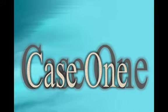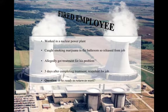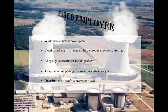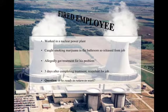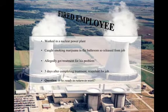My point in this presentation is to quickly run through these scales and then get to a case vignette to help understand how the MMPI might work. We have an individual who worked at a nuclear power plant, was caught smoking marijuana in the bathroom, was released from his job, allegedly got treatment for his problem, and three days after completing treatment reapplied for his job. The question is: is he ready for work? The employee assistance program refers this individual for an evaluation, and you decide to use an MMPI in addition to a structured interview to assess his readiness to return to work.